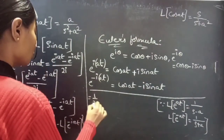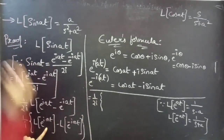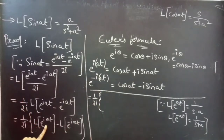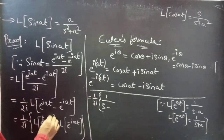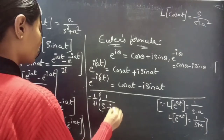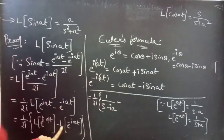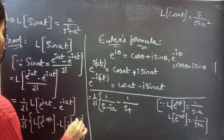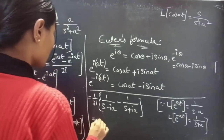So this becomes 1 by 2i into: L of e power i-a-t written as 1 by s minus i-a, minus L of e power minus i-a-t written as 1 by s plus i-a.